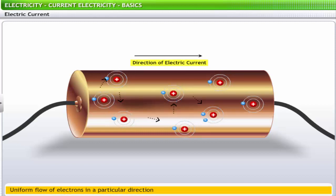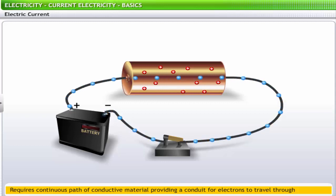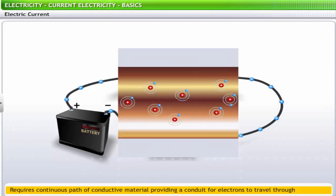The direction of electric current is the same as the direction of flow of electrons. Electric current requires a continuous path of conductive material to provide a conduit for electrons to travel through. Electrons move in the empty spaces within and between the atoms of a conductor. As each electron moves uniformly through a conductor, it pushes the one ahead of it. Thus, all the electrons move together as a group.